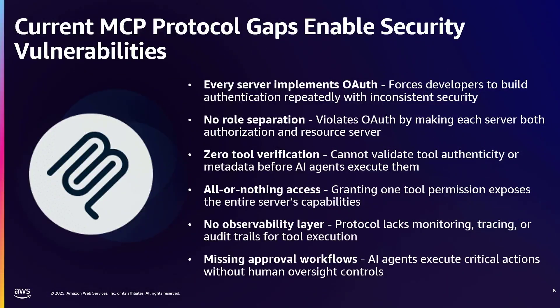A couple of gaps have emerged on the MCP protocol side, especially around security vulnerabilities. Every server implements OAuth and forces developers to build authentication repeatedly with inconsistent security styles and methods. There's no role separation between the OAuth server and the resource server itself. There's zero tool verification — no way to verify tools themselves, at least currently. There's all-or-nothing access, meaning granting one tool permission exposes the entire server's capabilities across MCP. There's no observability layer — no ability to do governance or audits — and there are missing approval workflows, where AI agents execute critical actions without human oversight.